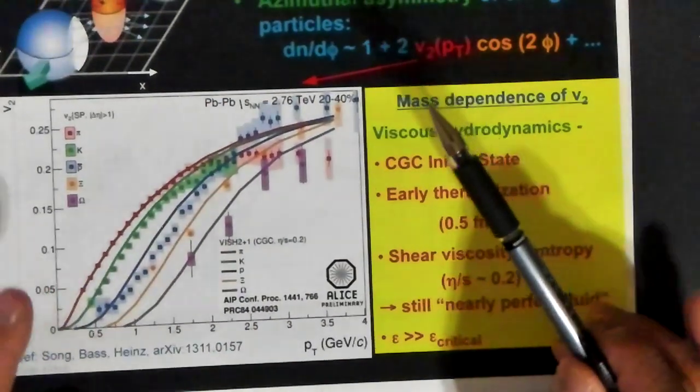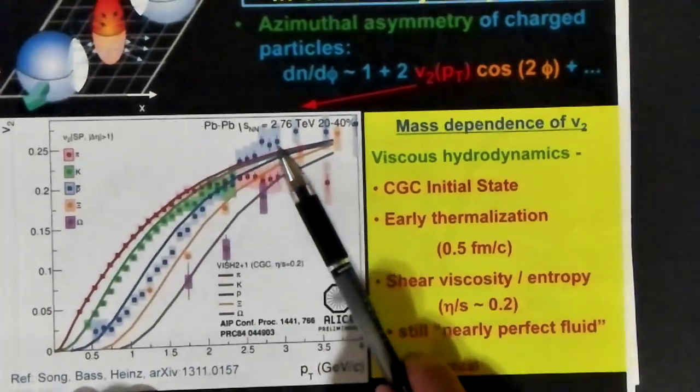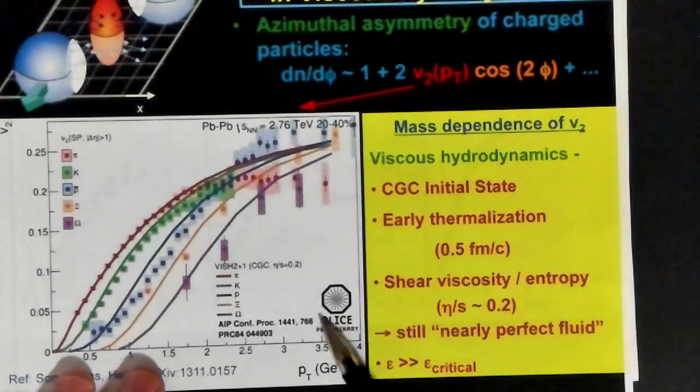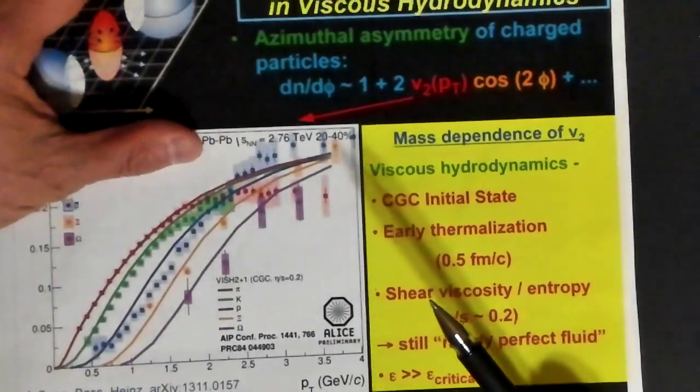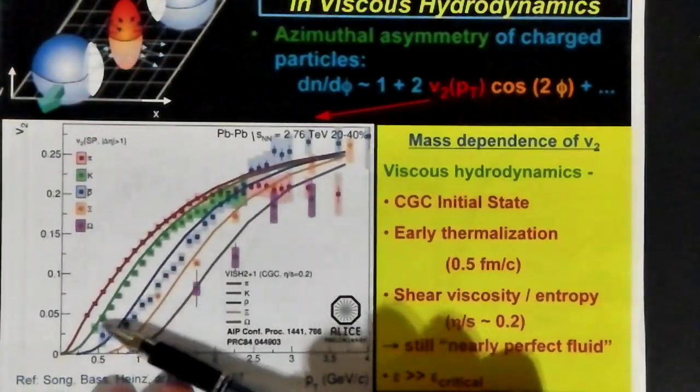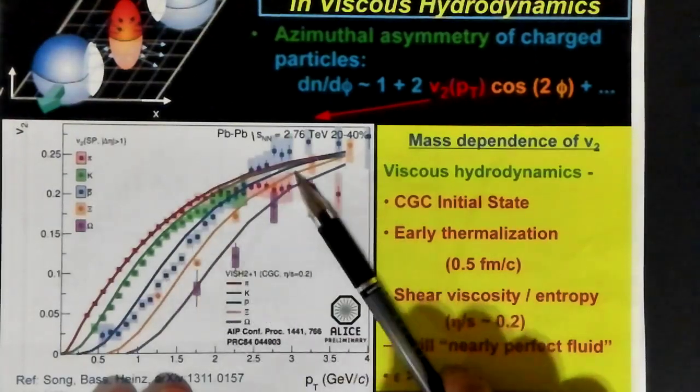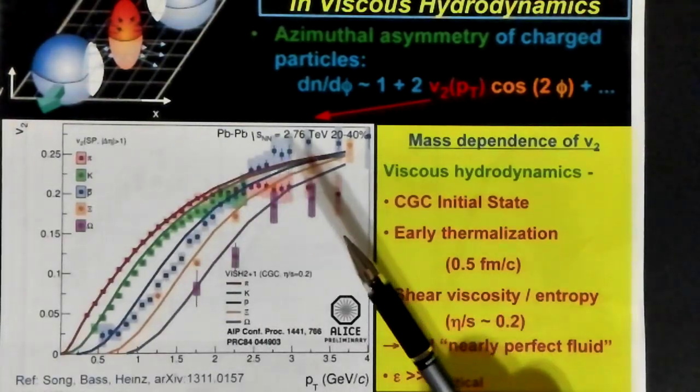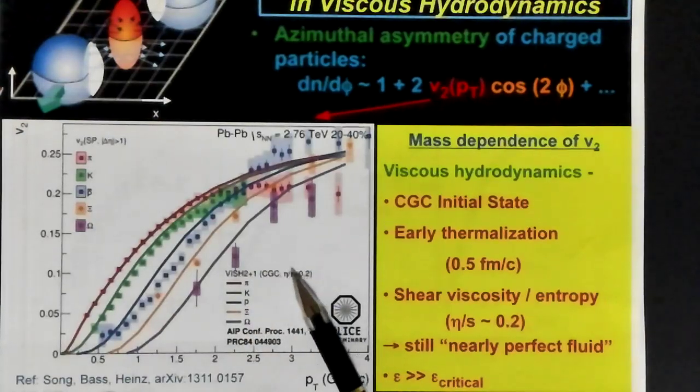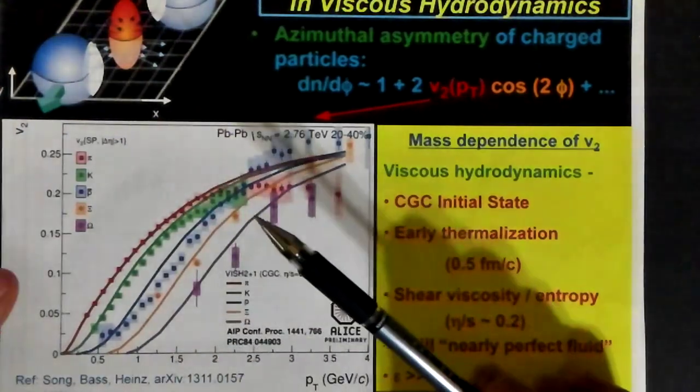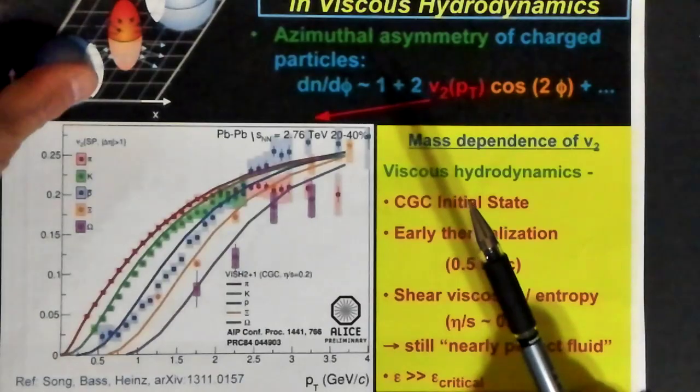Here's more data. This is at much higher energies. This is from ALICE, at the Large Hadron Collider. Again, we're showing the V2, and we see a little bit of curvature here. In this case, in order to get this behavior, you need to introduce some viscosity.